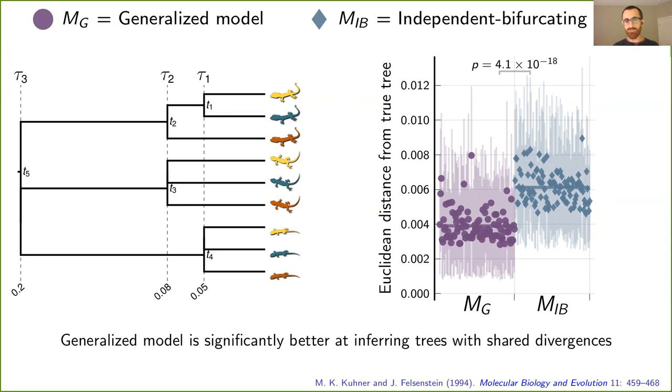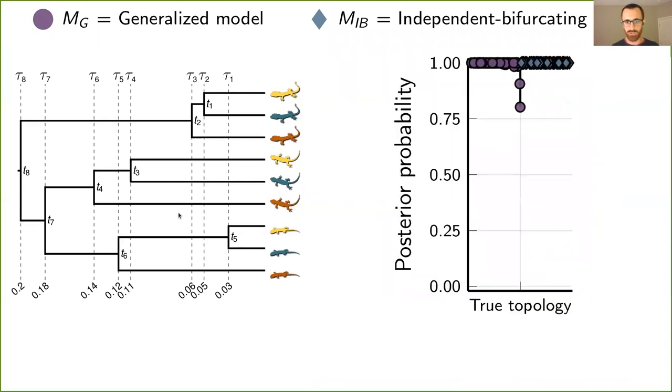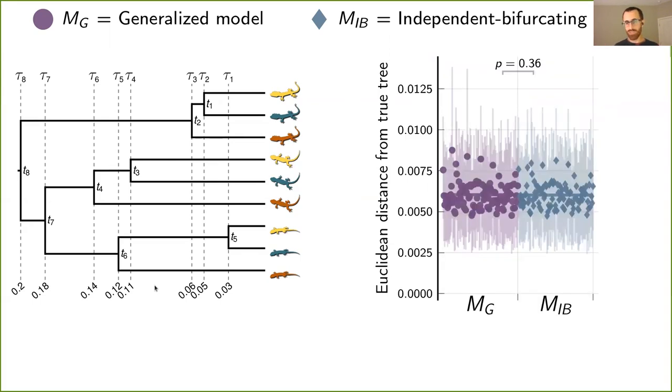That's great. But what if there aren't any shared divergences? What if they're all independent and bifurcating? Is there a cost to the new approach? Well, it doesn't look like there's much a cost here. So when we simulated data sets on this tree, both approaches almost always inferred the correct topology with high posterior probability. And if we look at distances from the truth, they're indistinguishable. So there doesn't seem to be a cost of using this new approach, even if there aren't any shared divergences.